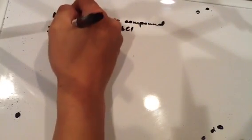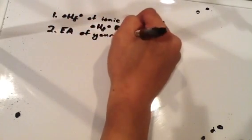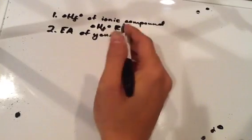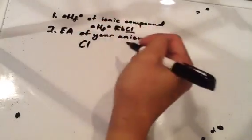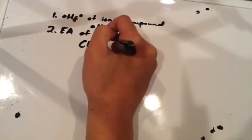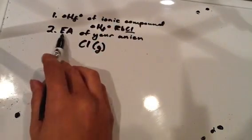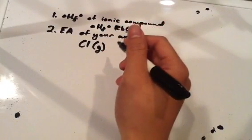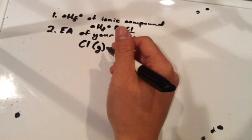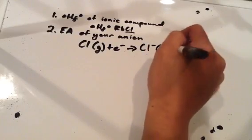The second thing you should be looking for is the electron affinity of your anion. For example, we have Cl-. So we have Cl gas, because whenever you're doing electron affinity, it's in a gas form. If we have the EA of our anion, I have Cl plus an electron, and I'm going to turn that into Cl- gas.